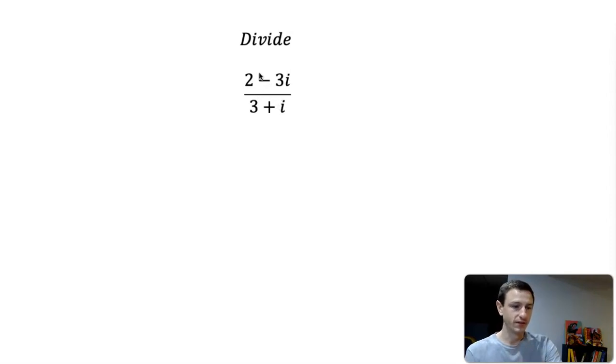In order to divide these expressions, what we have to do is multiply by the complex conjugate, and the conjugate is going to be 3 minus i. So we want to multiply both the top and bottom by 3 minus i.